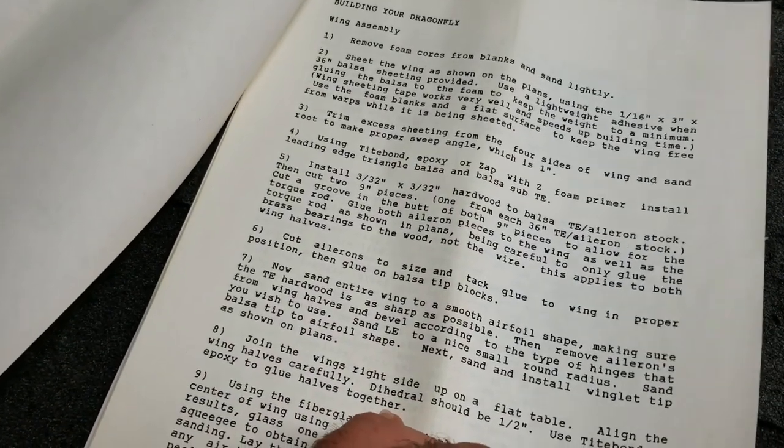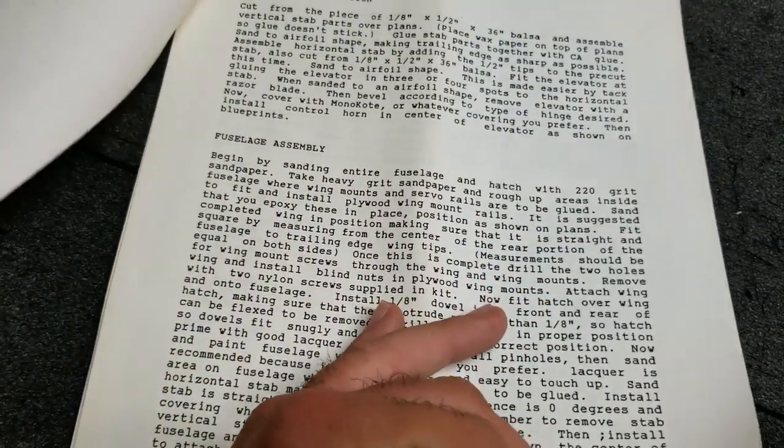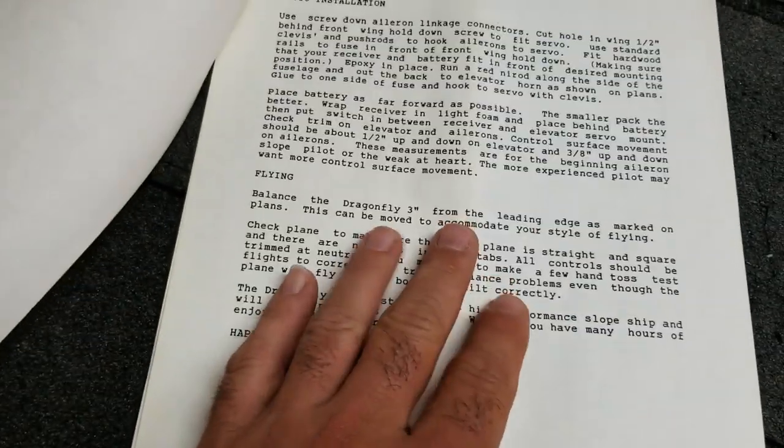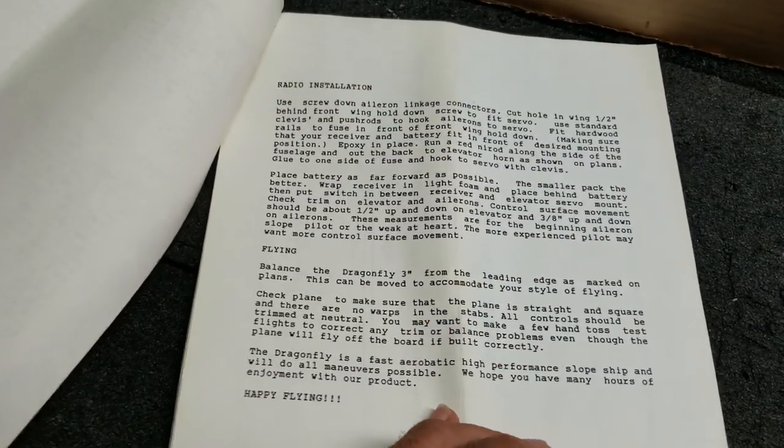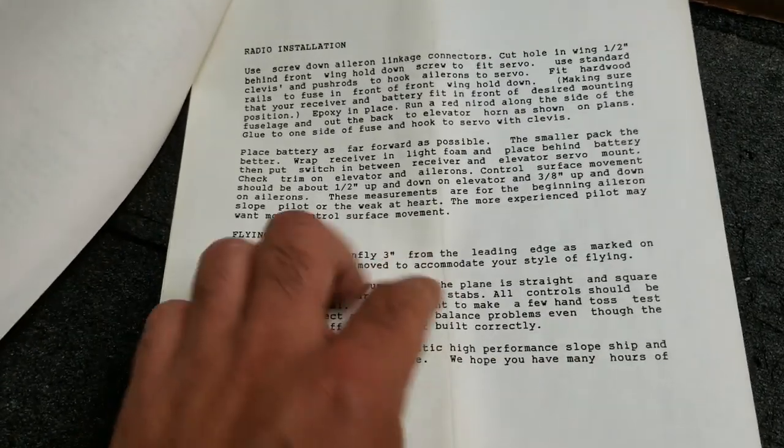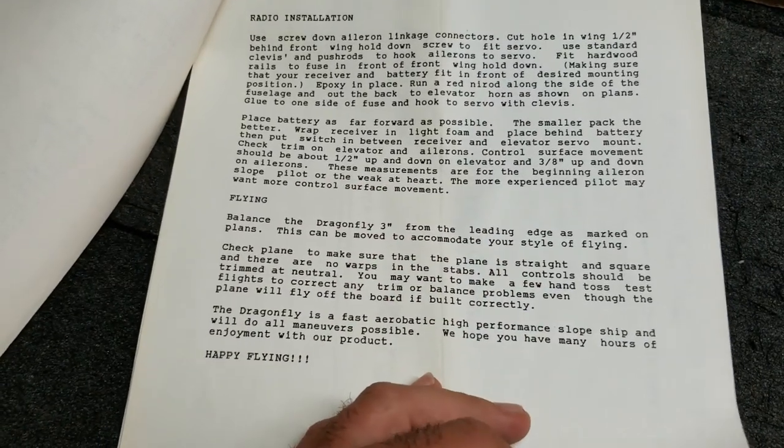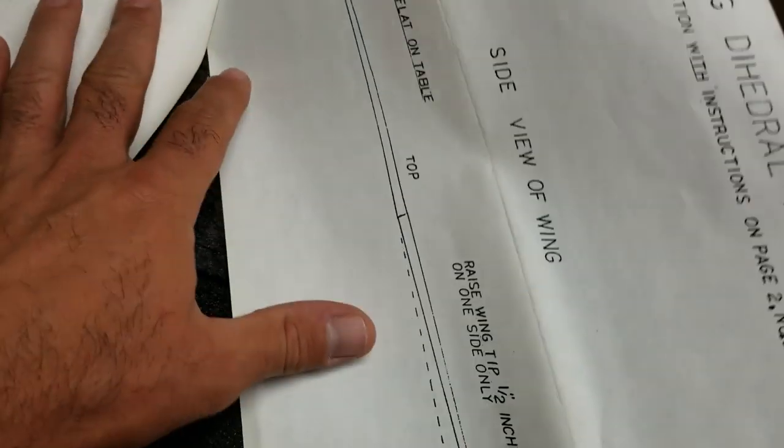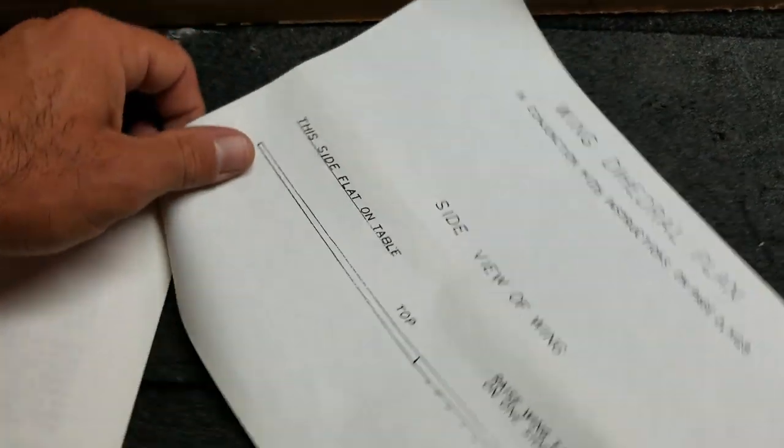And we are going to start with building the wings. So that was the wing. And then we're going to the fuselage assembly here. And look how much text there is. Really back in the day, manufacturers really went out of their way to type up some good instructions. So that seems to be the last page of instructions.